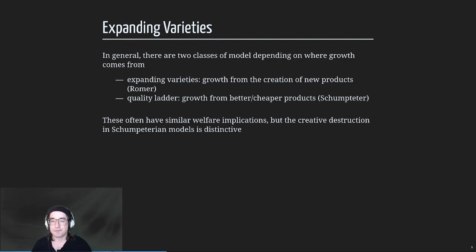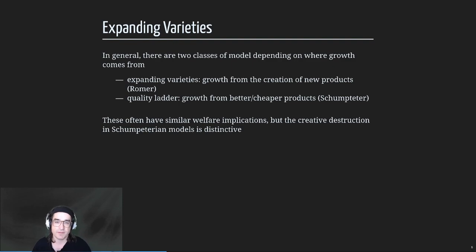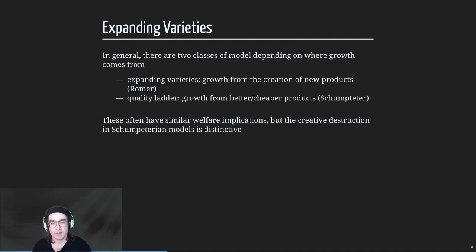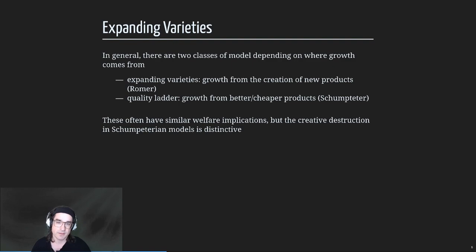The other option is we're going to have the same products but just make them cheaper or better. This relates to the smartphone example - we're going to be doing the same things but much more cheaply. This would be more like production techniques - how do you make semiconductor manufacturing cheaper, how do you make an equivalent speed microprocessor for less money. That's called the quality ladder model.